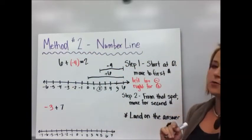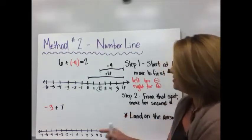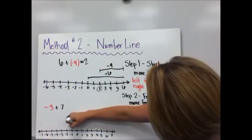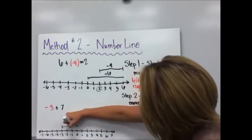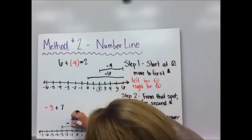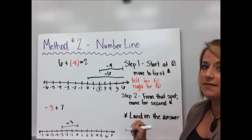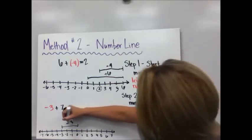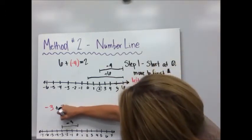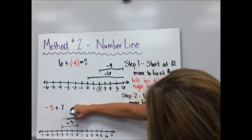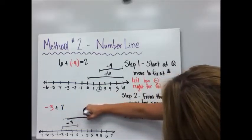Let's do this again. Negative three plus positive seven. So starting at zero, we're going to move three spots to the left because I go left for negatives. And then I'm going to move seven spots to the right for positives. One, two, three, four, five, six, seven.